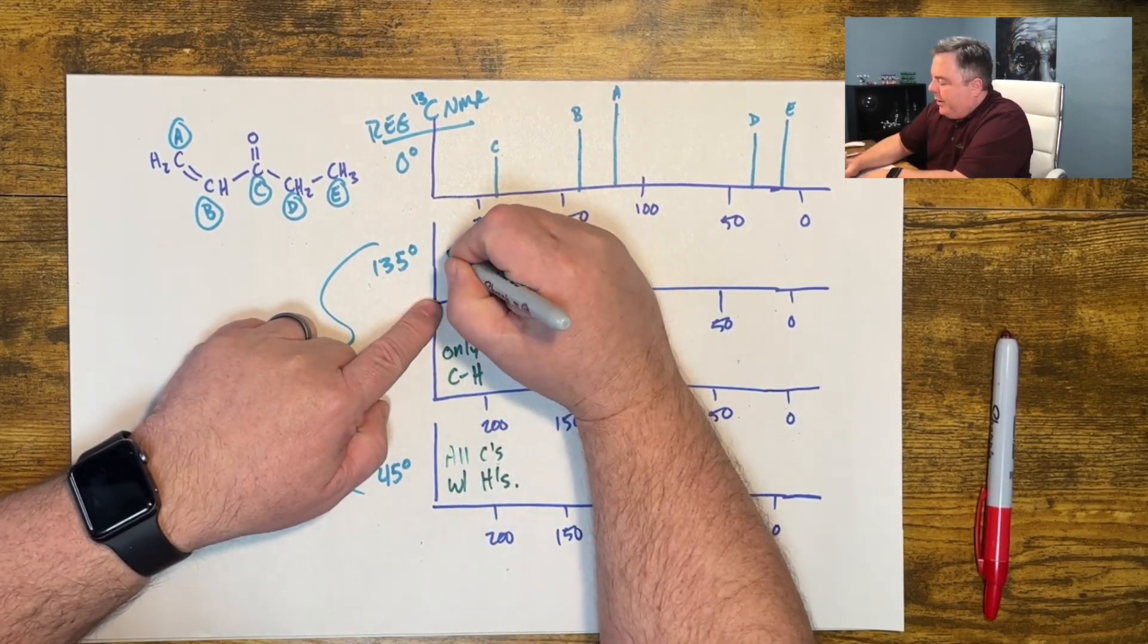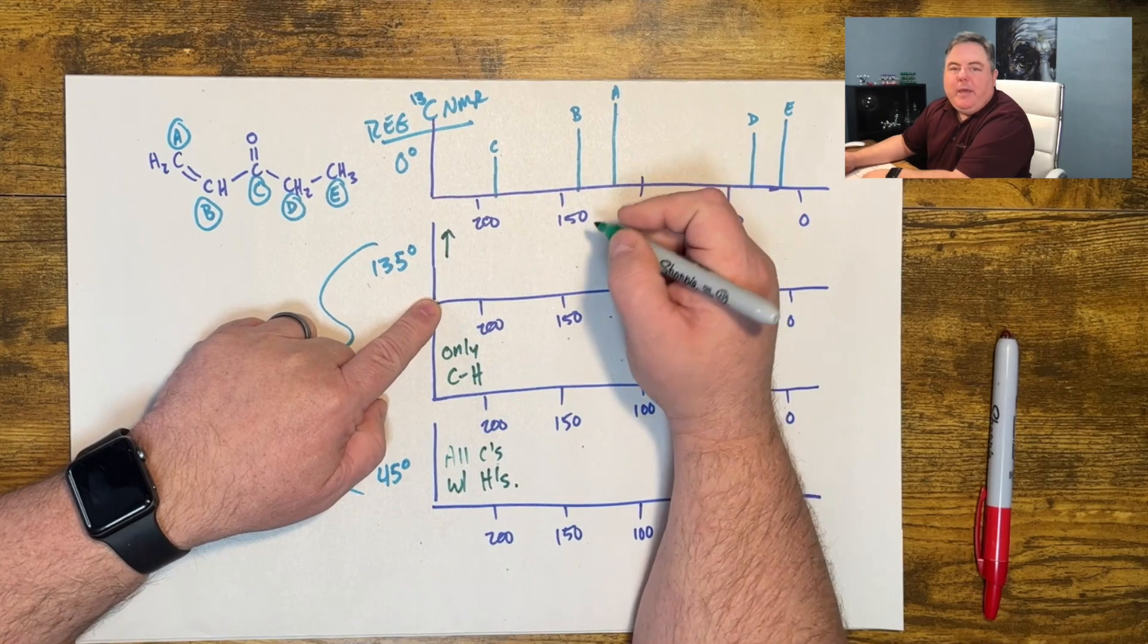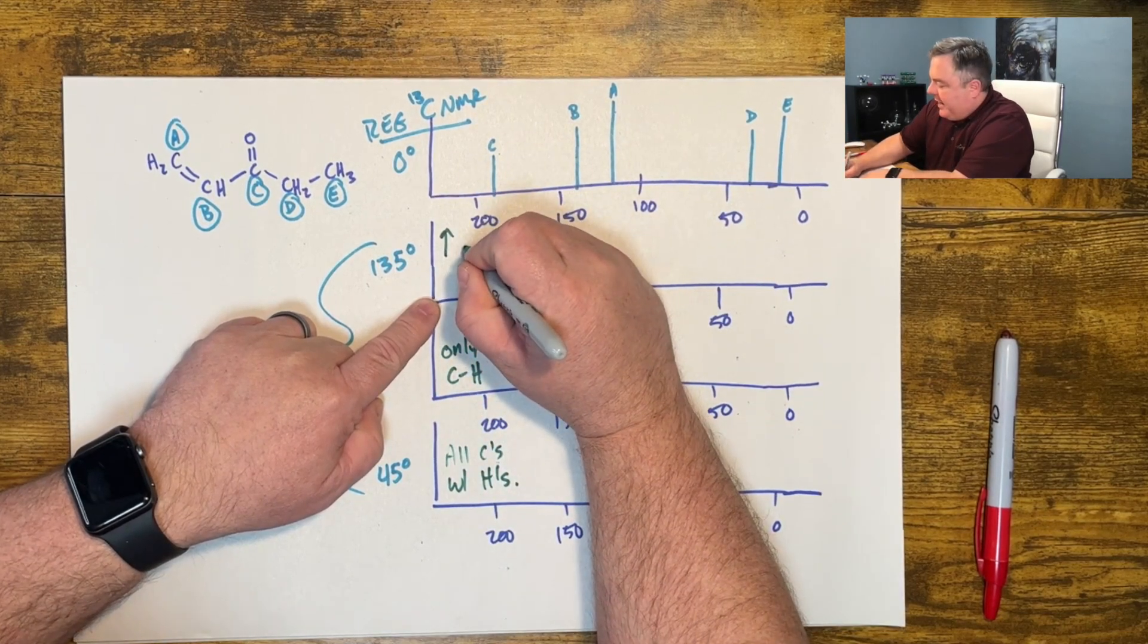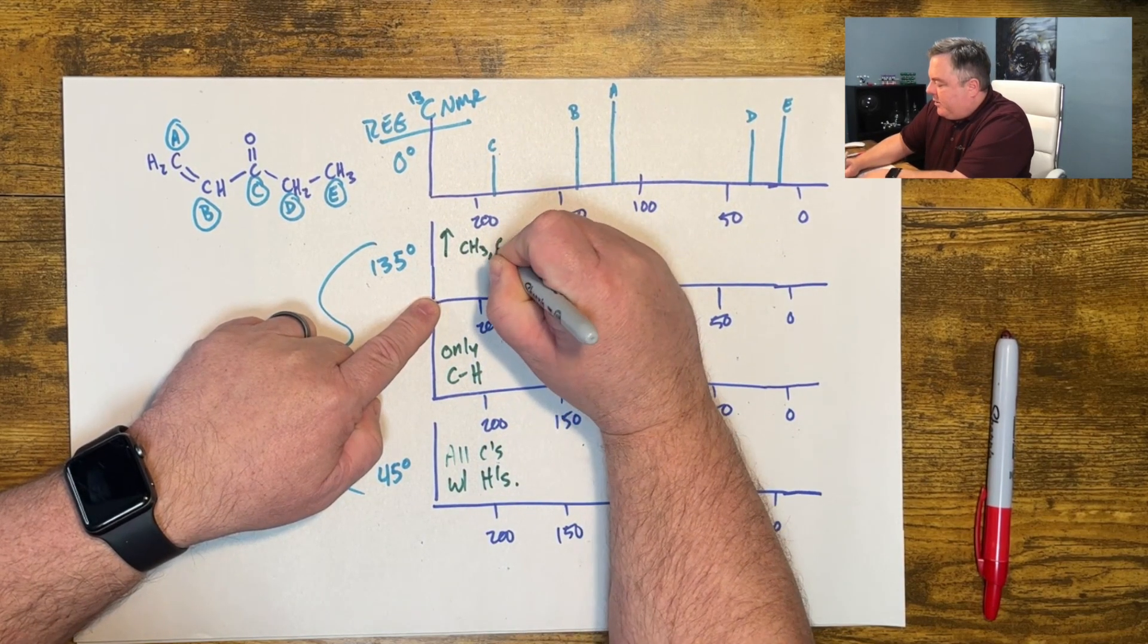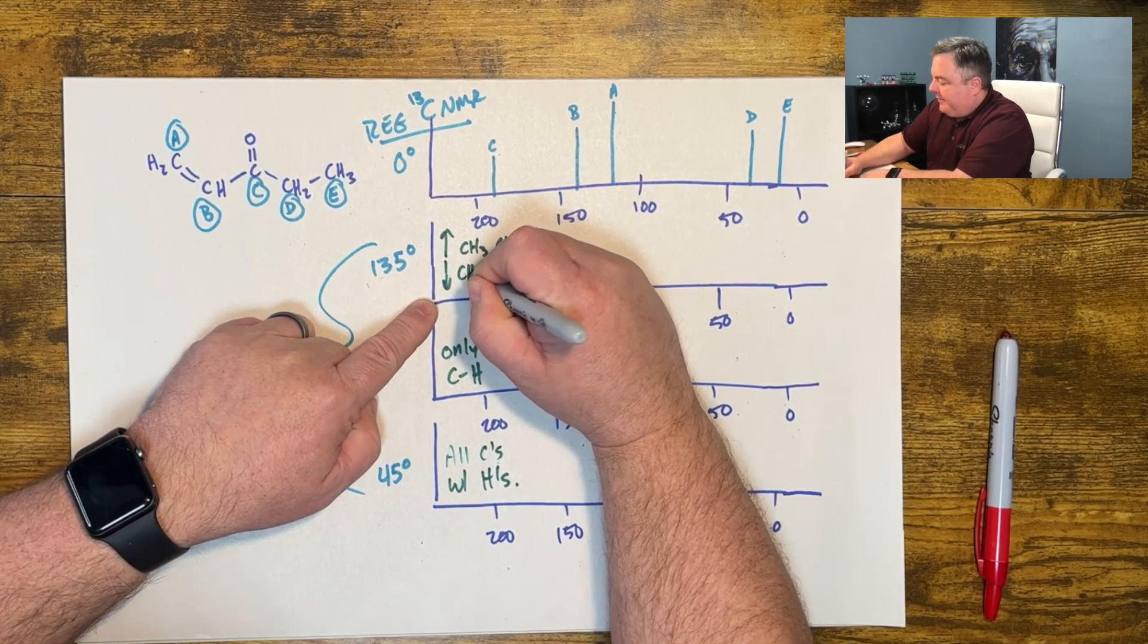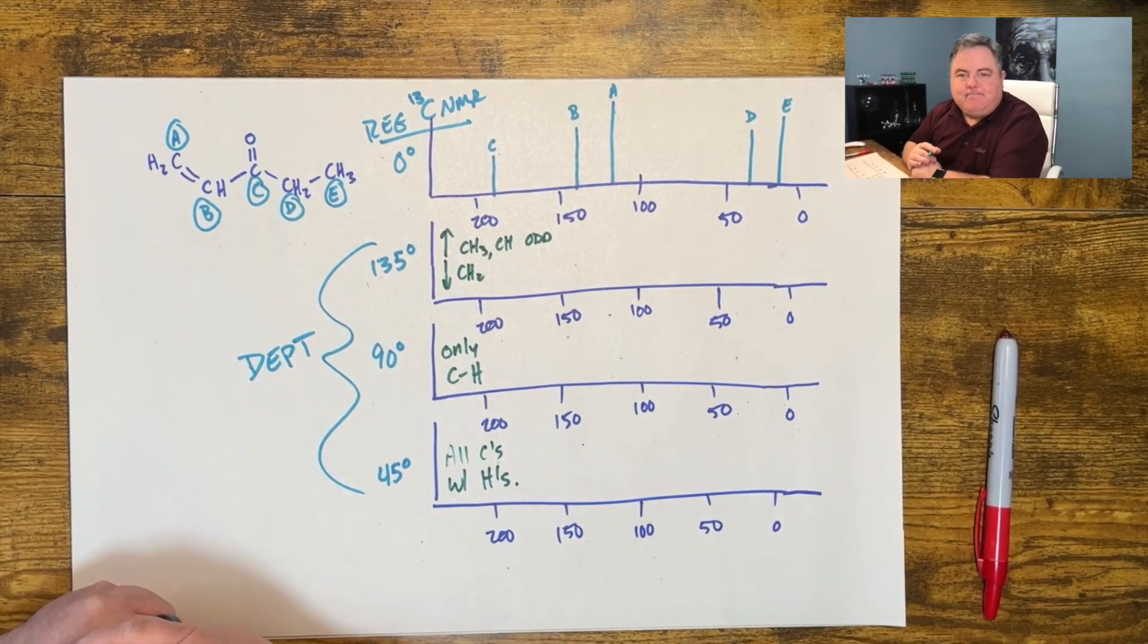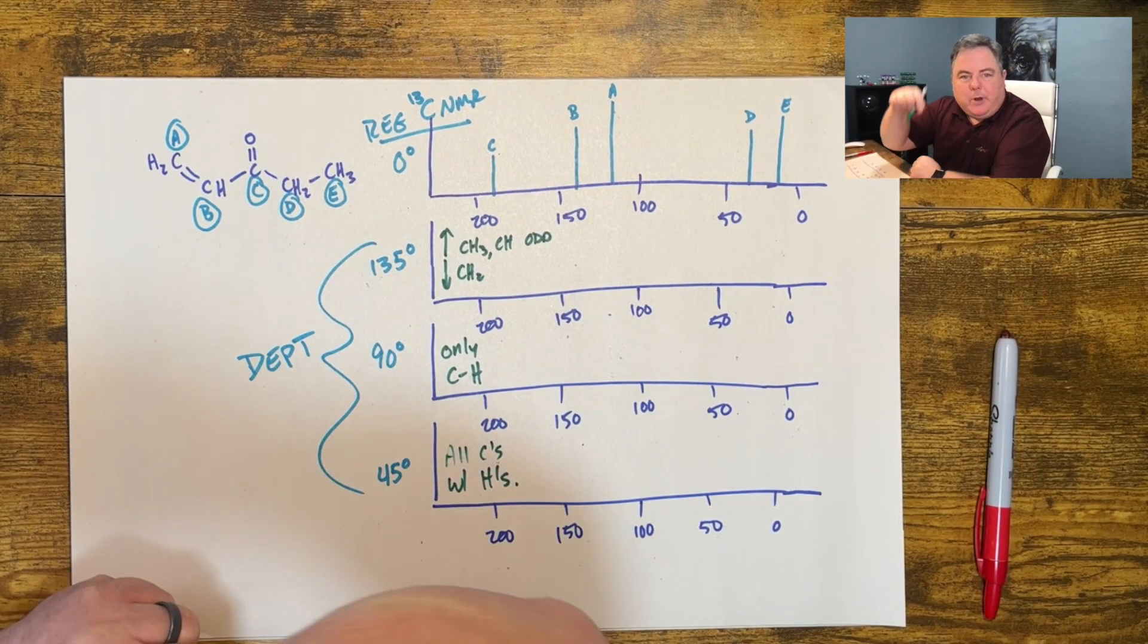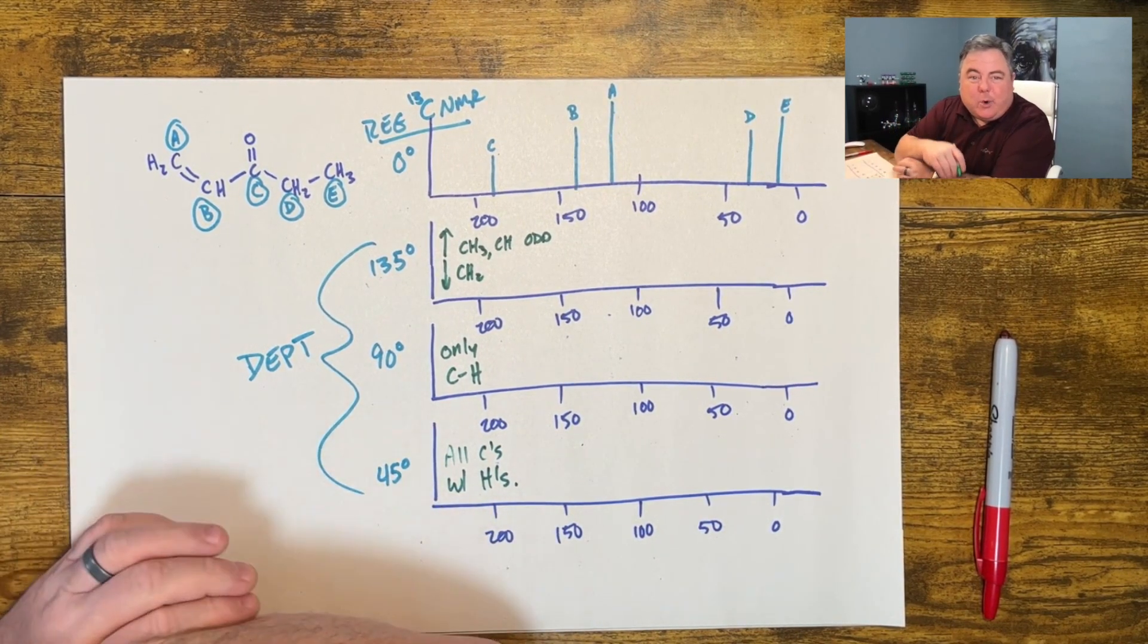And the 135 degree, a peak points up if it has a CH3 or a CH, an odd number of hydrogens, and it points down if it has a CH2. Okay, even but only CH2s.